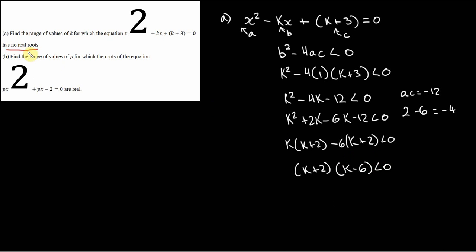And so our range of values of k, we could say that k is going to be greater than negative 2, right? Because this would be negative 2. And less than 6, that would be 6, positive 6. So that's the answer for part a.